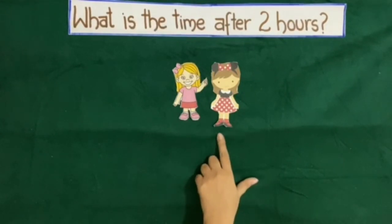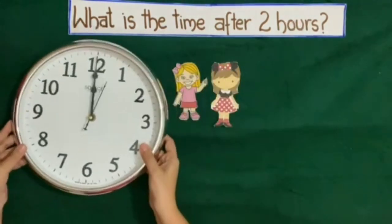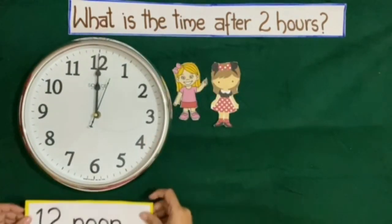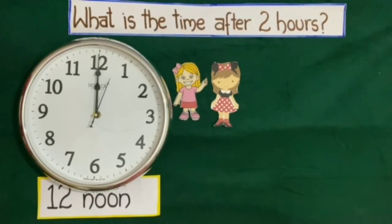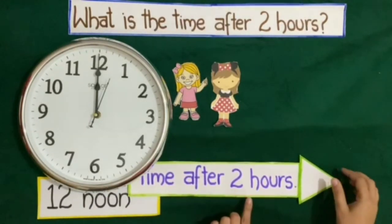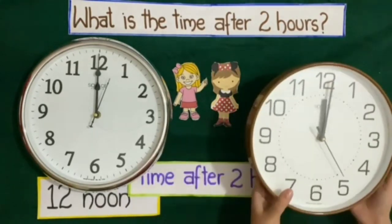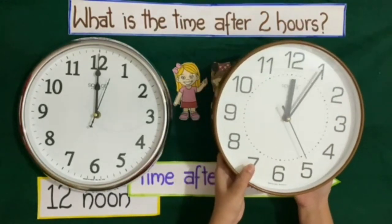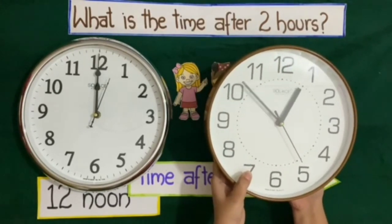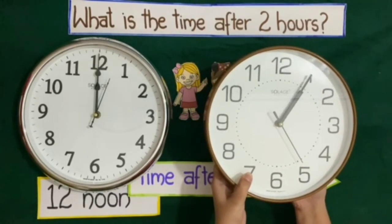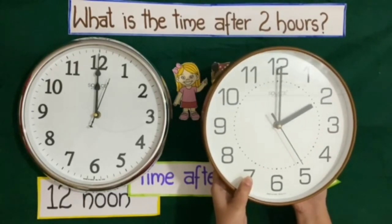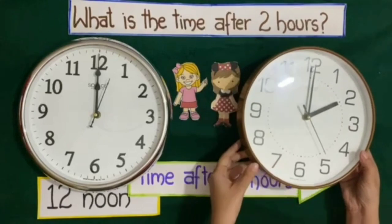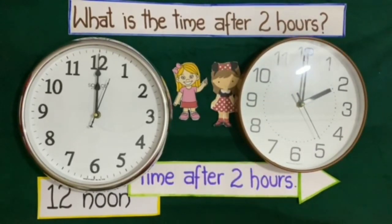Rinky and Pinky went to watch the circus. The circus started at 12 noon, that is in the afternoon. The show finished after 2 hours. After 1 hour the time will be 1 PM, and after 2 hours the time will be 2 PM. So the circus finished at 2 PM.